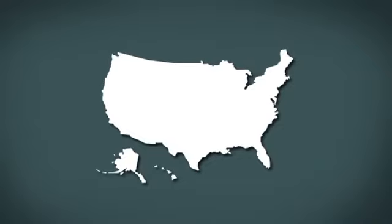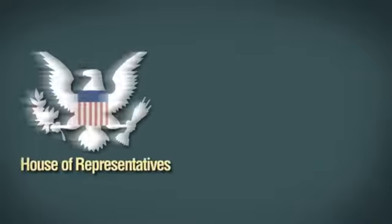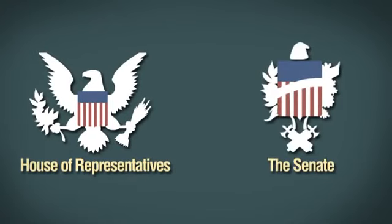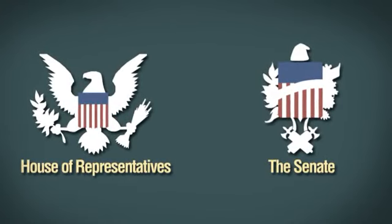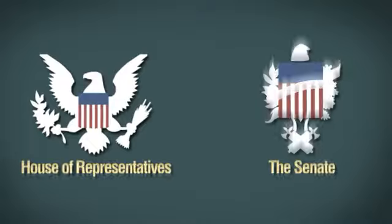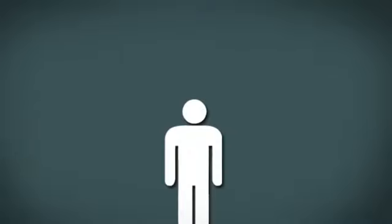Like the UK Parliament, the United States Congress has two houses: the House of Representatives and the Senate. Unlike the UK, there are public elections for both houses, and a third, separate election is held to choose a president.